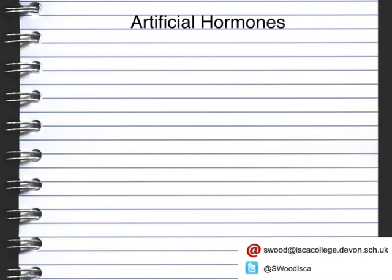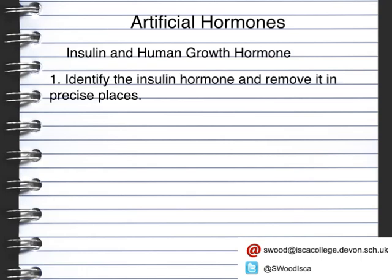Artificial hormones are replicas of hormones that exist naturally in the human body. These can be made artificially using gene technology. This is really useful for the production of hormones such as insulin and the human growth hormone. The way the insulin hormone is reproduced artificially starts with it being identified and removed in precise places, using the restriction enzyme.